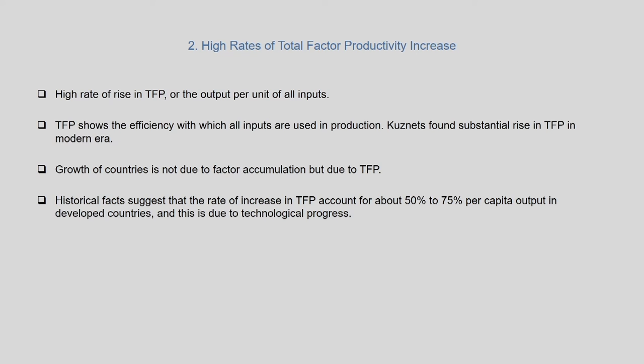Historical facts suggested that the rate of increase in TFP accounts for about 50 to 75 percent of per capita output growth in developed countries, primarily due to technological progress. This became a cornerstone of Kuznets' ideas of modern economic growth and distinguished labor productivity between developed and underdeveloped countries. Technological progress thus became one of the most important drivers of modern economic growth.